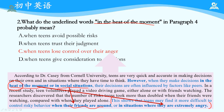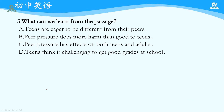第三题：What can we learn from the passage? A选项：Teens are eager to be different from their peers——整篇文章说的是随同伴压力有去同的选择，并没有提到eager to be different，而且与全文基调不符。B选项：Peer pressure does more harm than good to teens——的确提到了good effects and bad effects，but the author didn't rank them，没有比较谁多谁少。